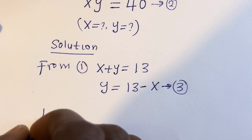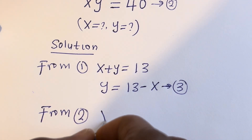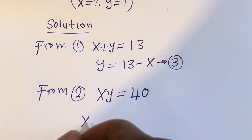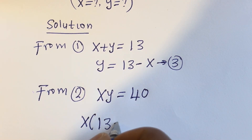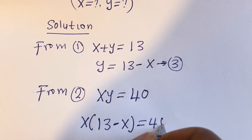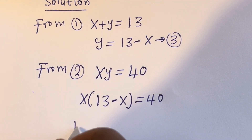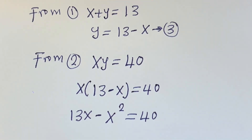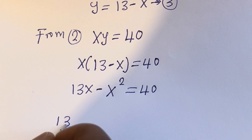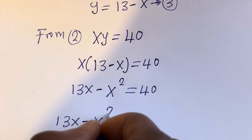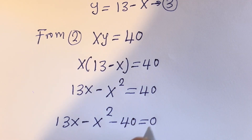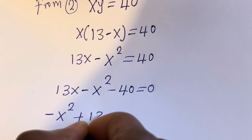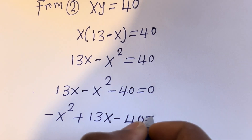From equation 2, S times Y is equal to 40. Substituting equation 3, S times (13 minus S) is equal to 40. Let's open the bracket: S multiplied by 13 is 13S, minus S multiplied by S is S squared, is equal to 40. This gives 13S minus S squared minus 40 is equal to 0, which can be written as minus S squared plus 13S minus 40 is equal to 0.